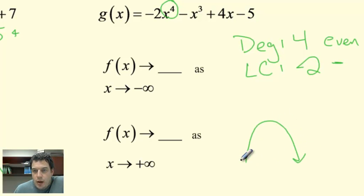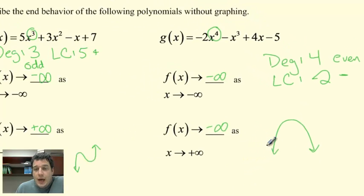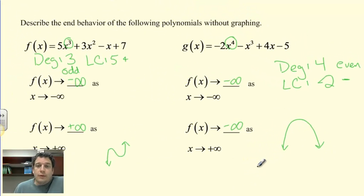It's kind of like a parabola that opens down, which means that f of x is going to negative infinity both as x goes to negative infinity, and f of x is going to negative infinity as x goes to positive infinity, because both ends are going down as we go to the right and the left. And so this is how we describe the end behavior of a polynomial.